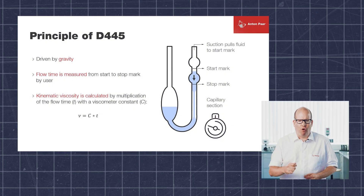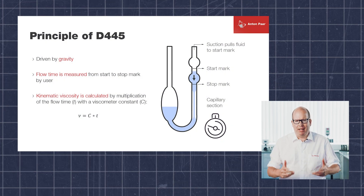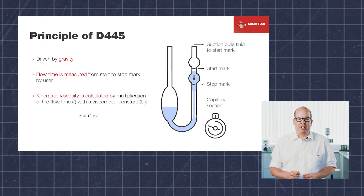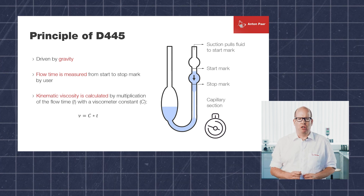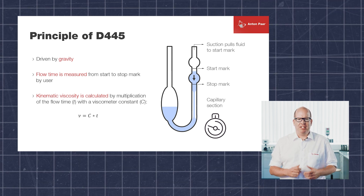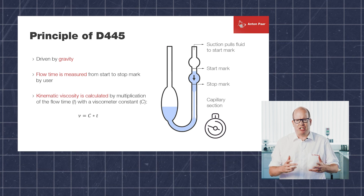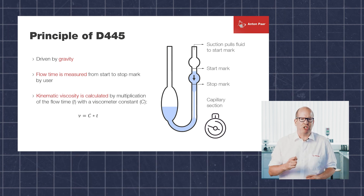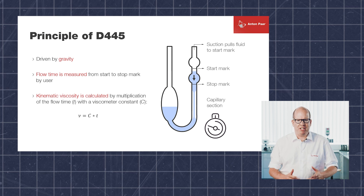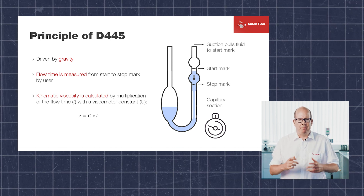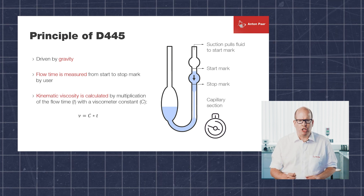Before I talk about the benefits, here's a quick comparison of the two methods. ASTM D445, the glass capillary method, is an old method established more than 80 years ago. It describes the determination of the kinematic viscosity of a sample with a glass capillary viscometer. The kinematic viscosity is calculated by measuring the flow time and multiplying it with a capillary constant.